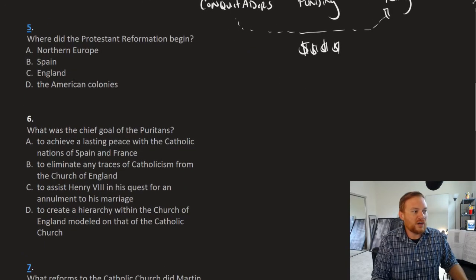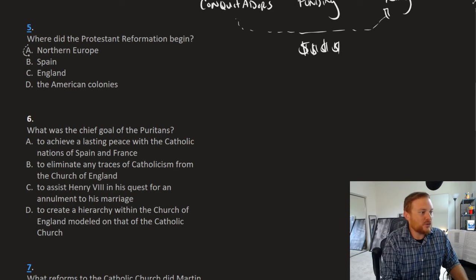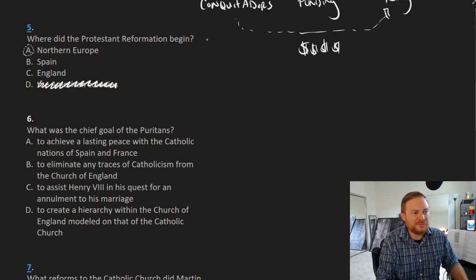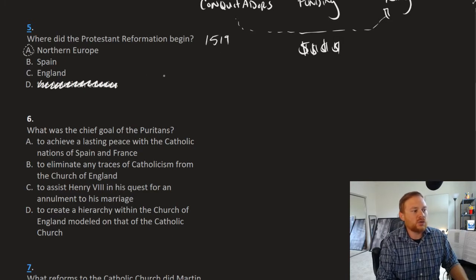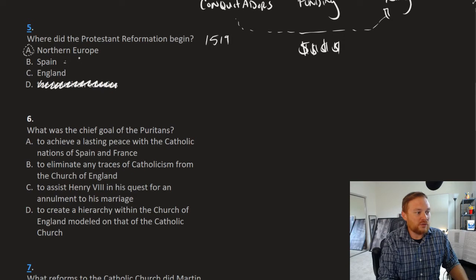Question number five, where did the Protestant Reformation begin? The answer is A, Northern Europe. We should be able to eliminate some choices. The American colonies, no way. The Protestant Reformation, roughly speaking, chronologically early 1500s, 1519 is coming to mind right now. Spain was a bastion of Catholicism. It remained Catholic for the duration of the Protestant Reformation.